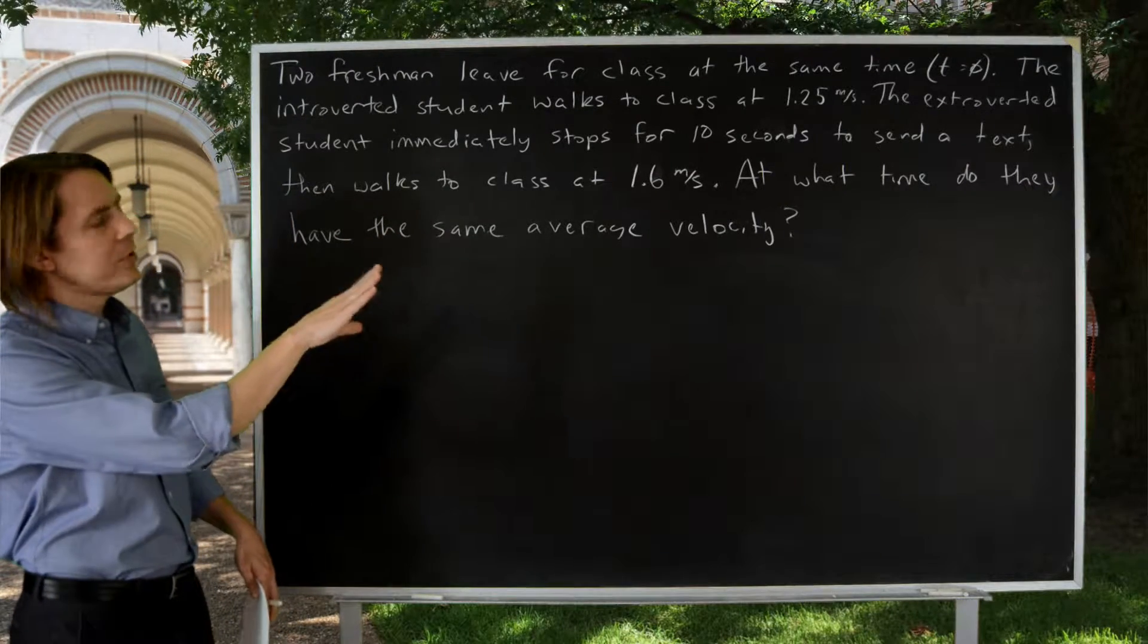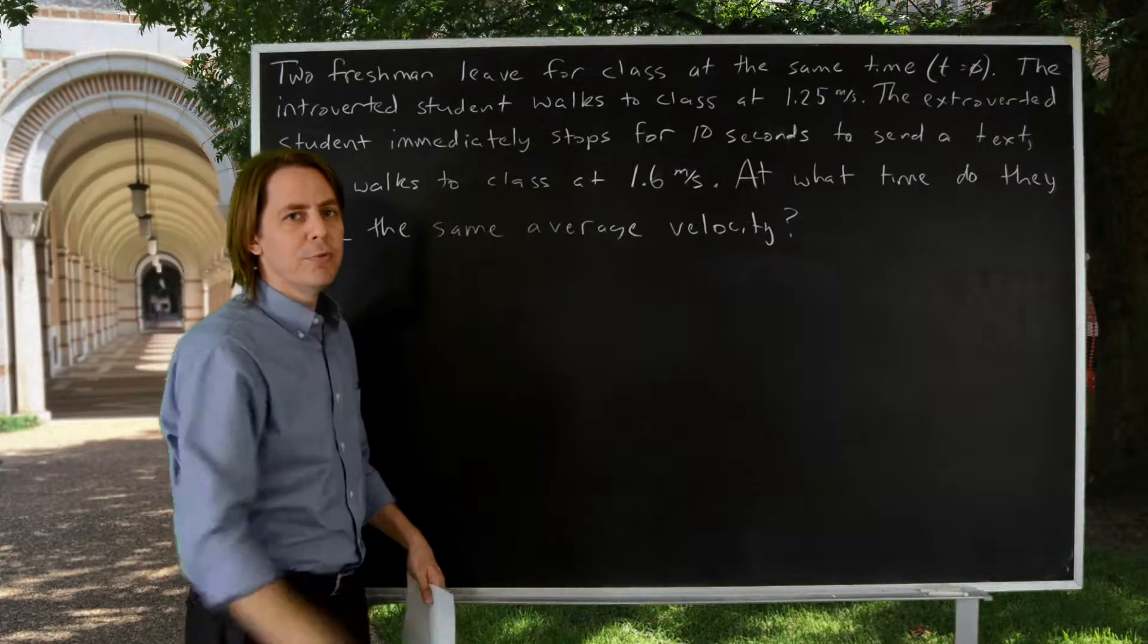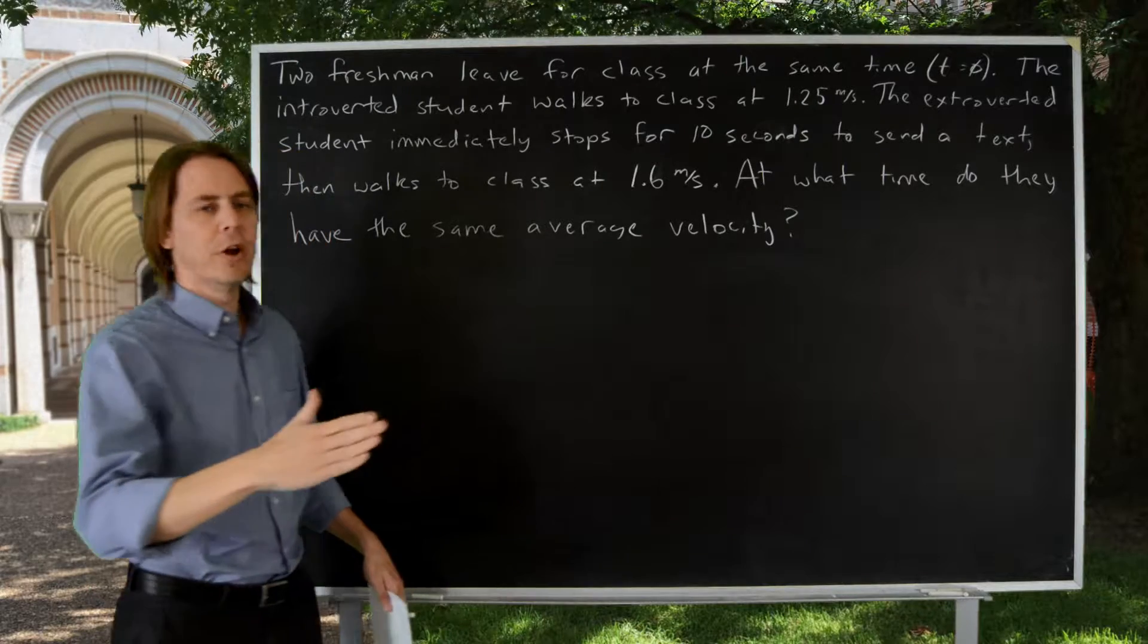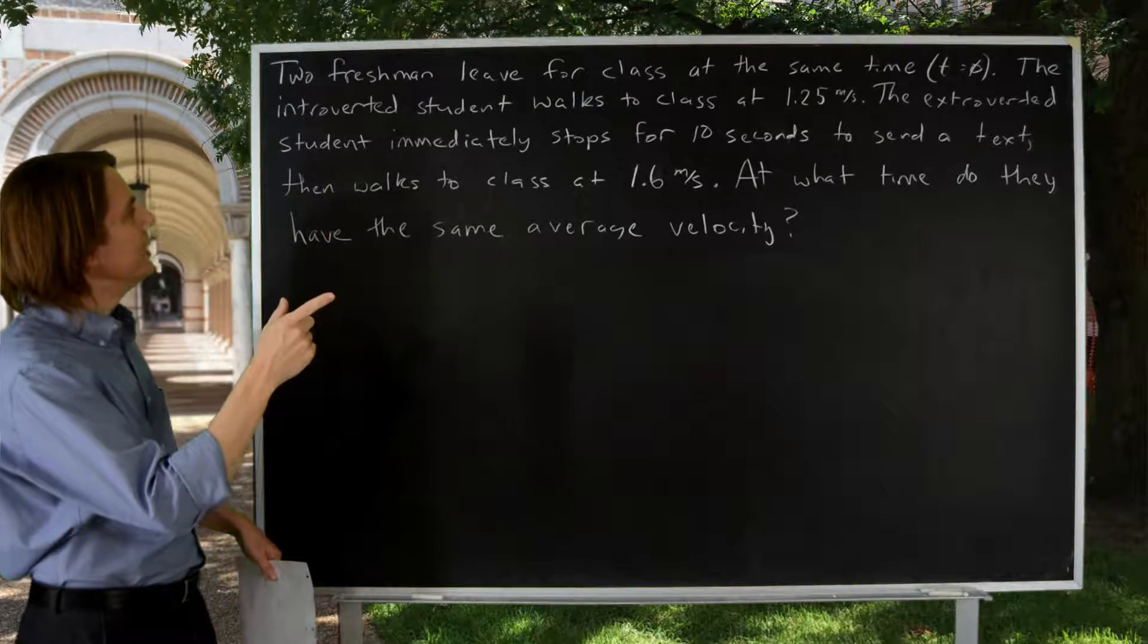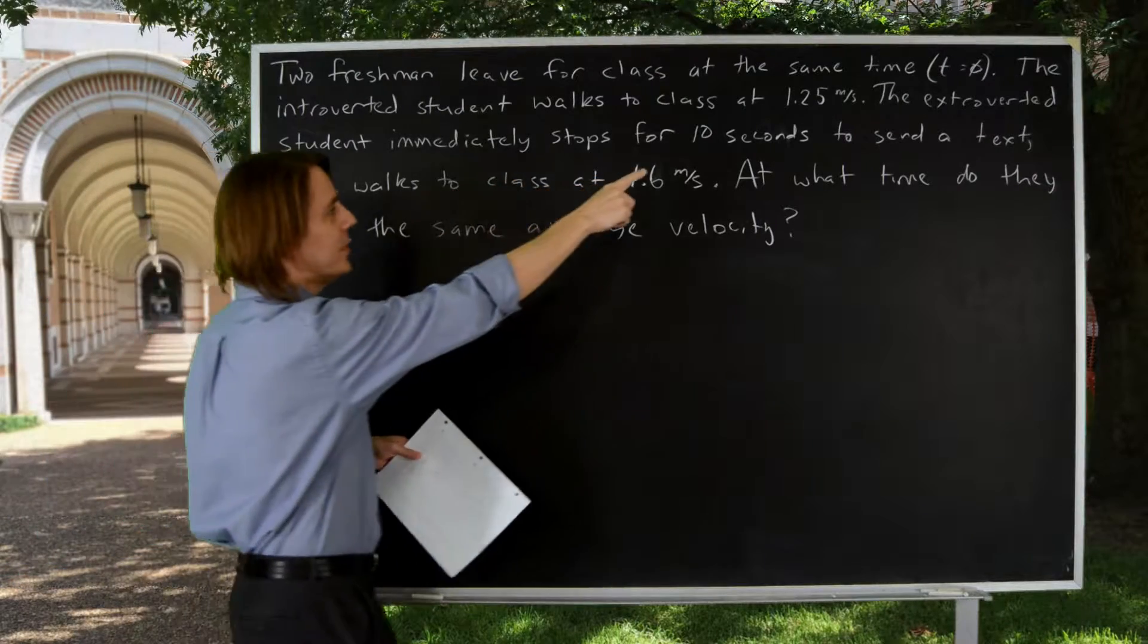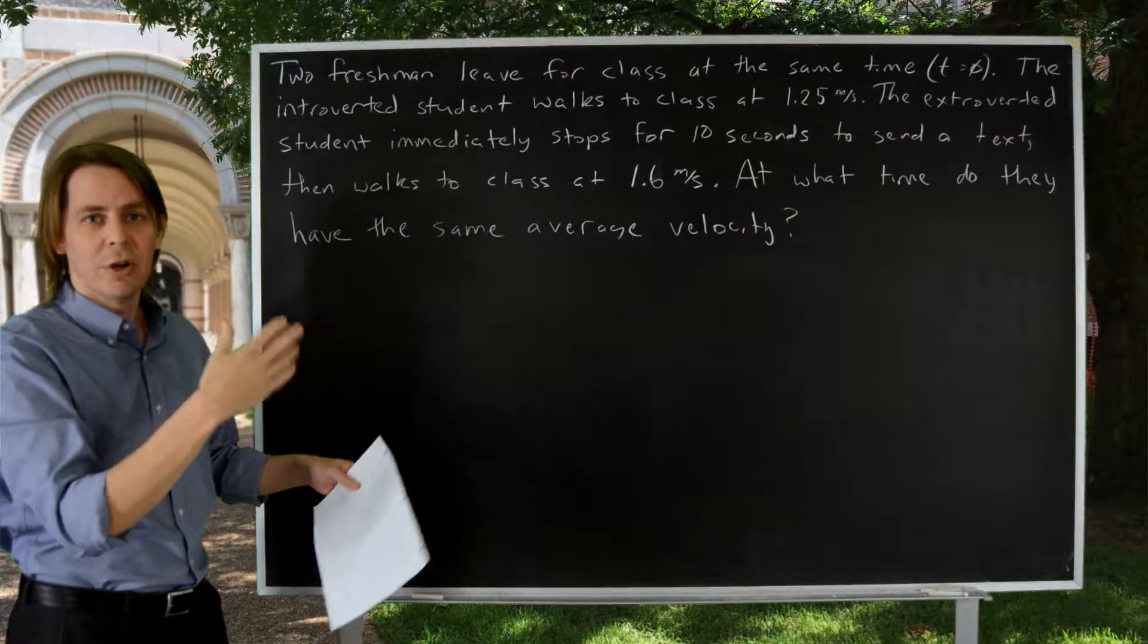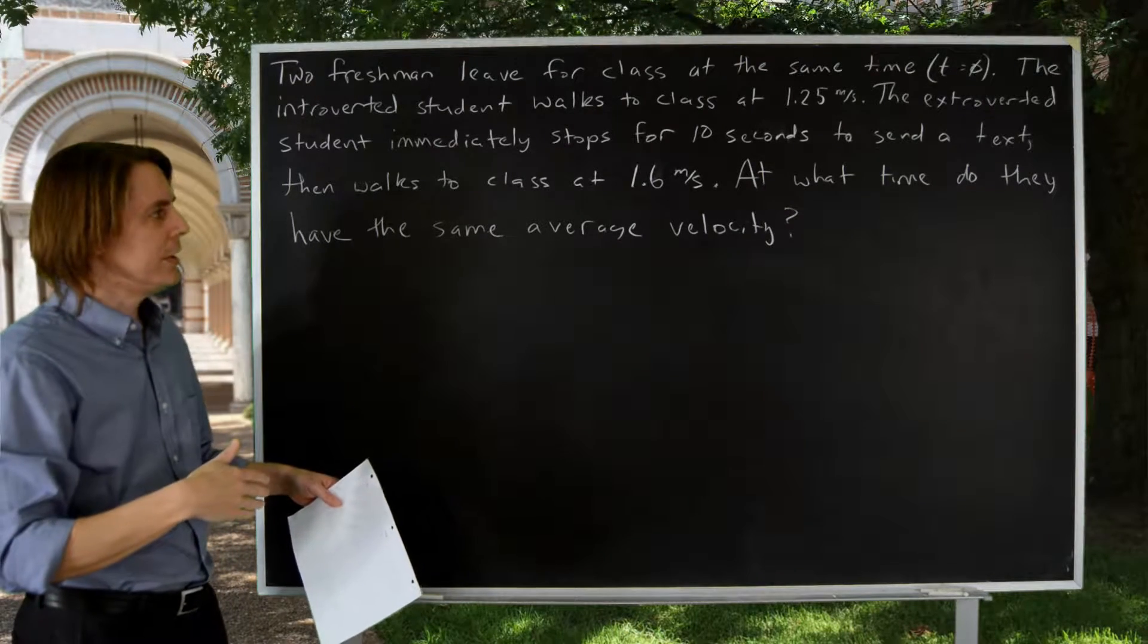In this problem we have two students walking to class. The introverted student walks at a steady 1.25 meters per second the whole time. The extroverted student actually doesn't take off at first, they have to text for 10 seconds, and then takes off a little bit faster, 1.6, because in the physics class there's a lot of people to talk to, they really want to get there.